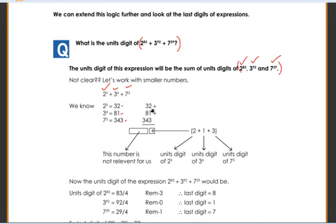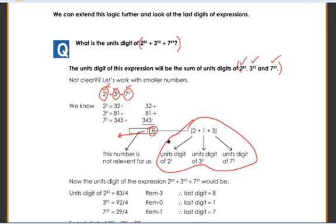The units digit will be 2 plus 1 plus 3. That is going to be the units digit, and we are not concerned about the other digits right now because we are looking at only the units digit. So the units digit of the sum is the sum of the units digits of 2 power 5, 3 power 4, and 7 power 3.